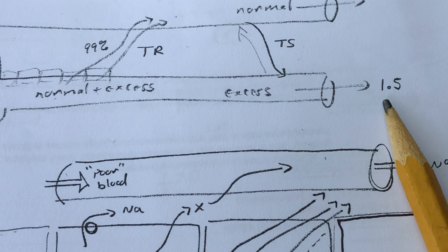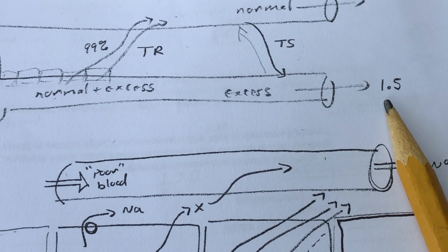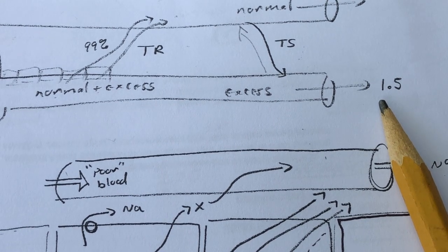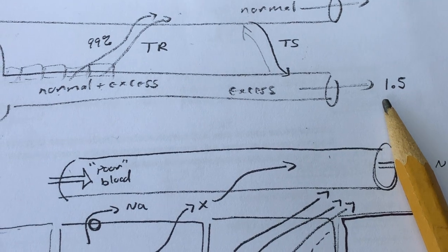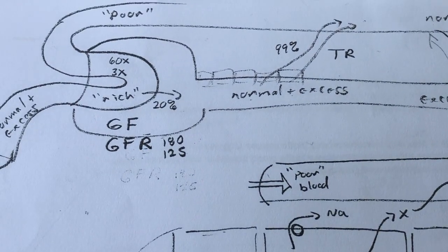So the excess becomes the urine that you produce, and the average individual produces about 1.5 liters of urine a day.